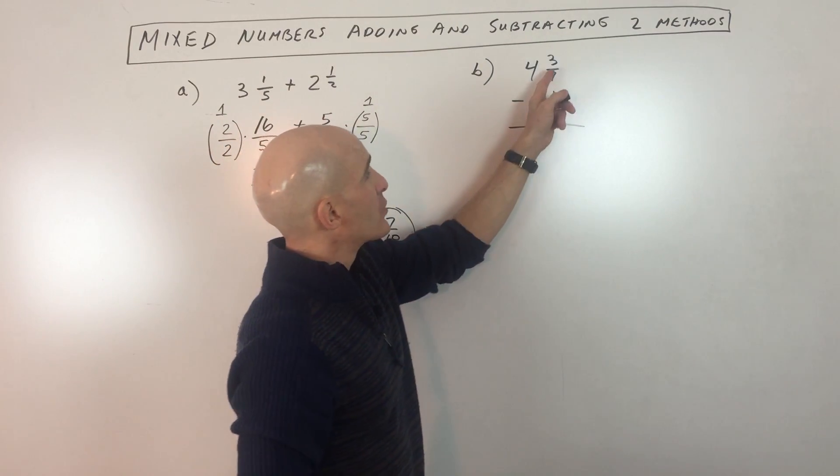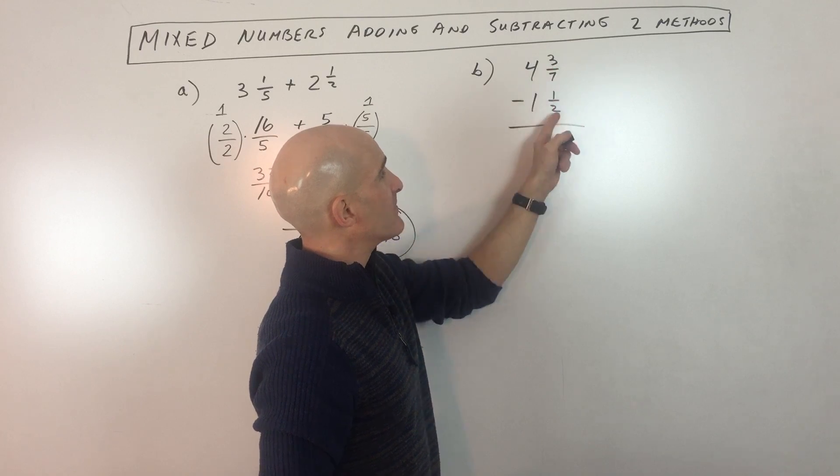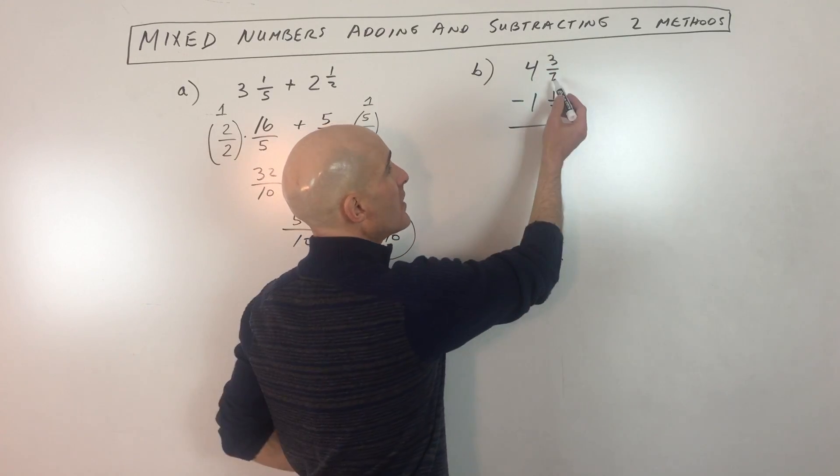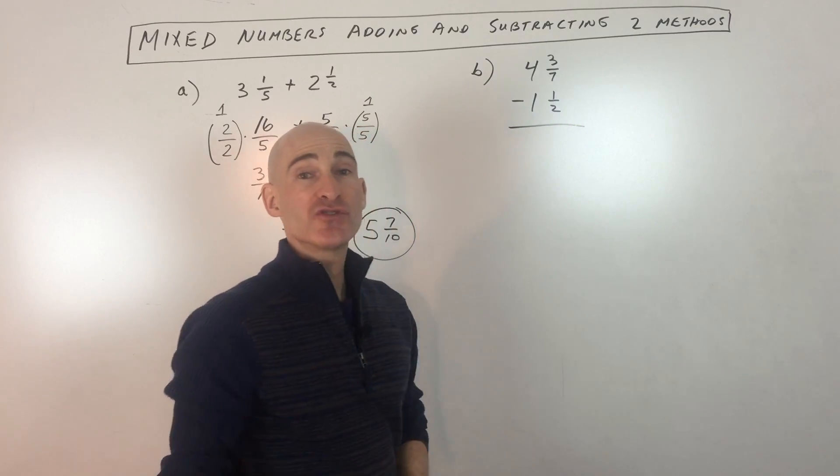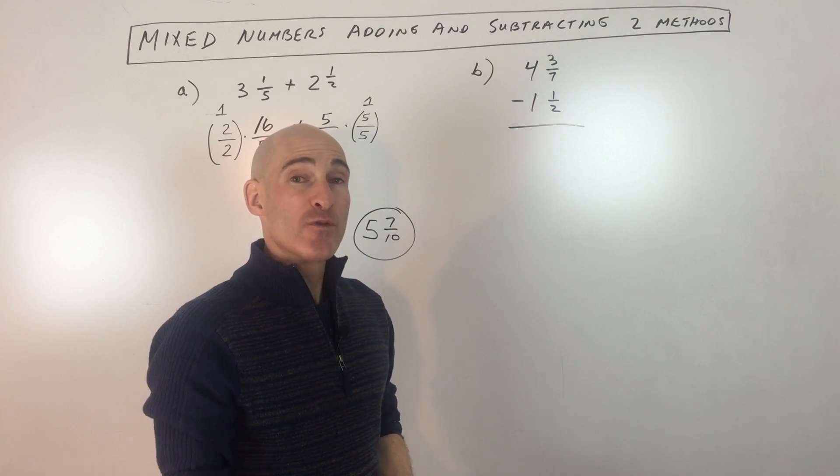Now the key thing here is we're going to look at these fractions and we're going to say, let's go ahead and get common denominators. What's the smallest number that seven divides into and two also divides into? Well, that would be 14, right?